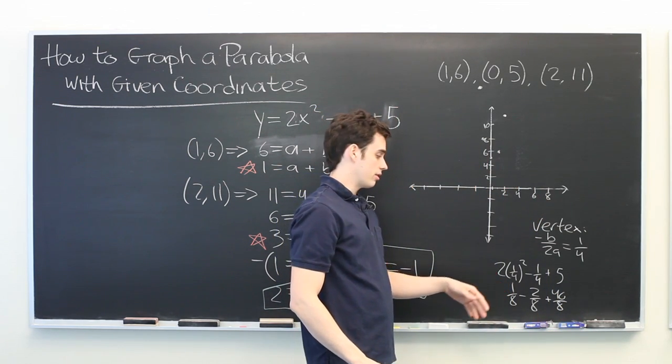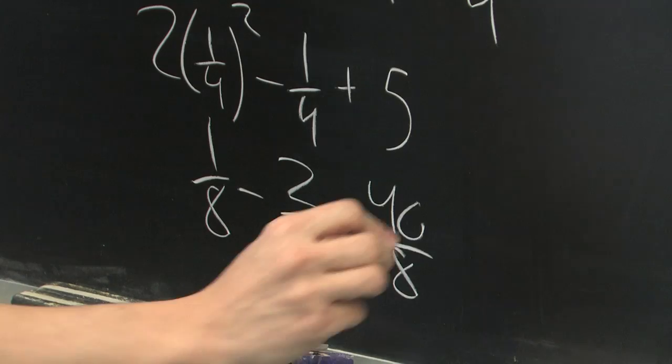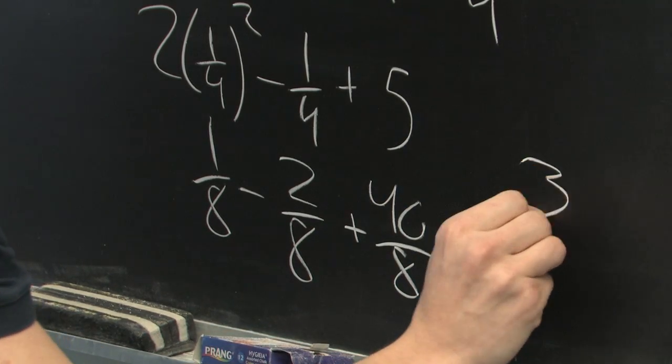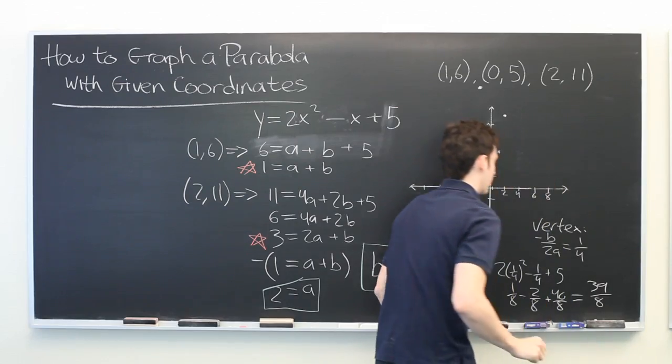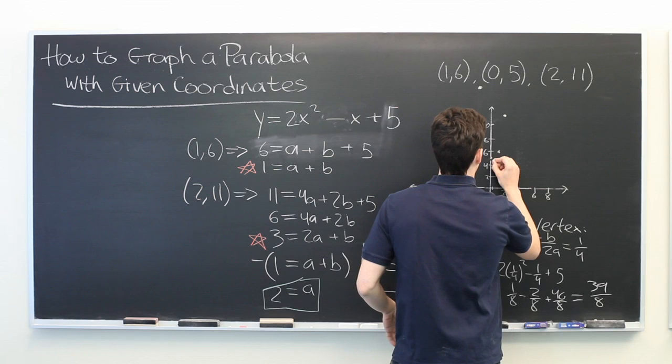And then 5 becomes 40/8. And then we can simply combine all these like terms. 1 plus 40 is 41, minus 2 is equal to 39/8, which is not a very pretty number, but it's going to sit right about here.